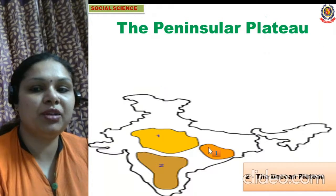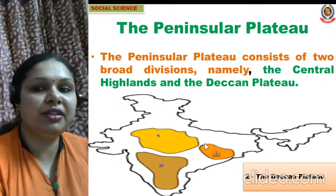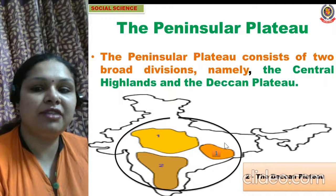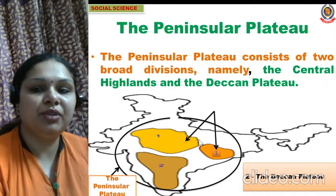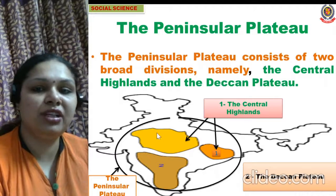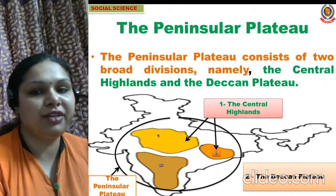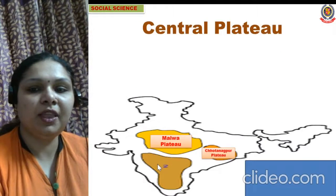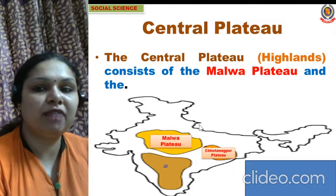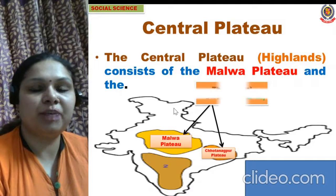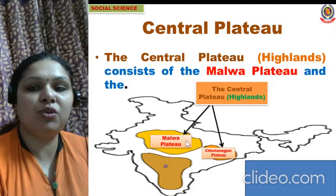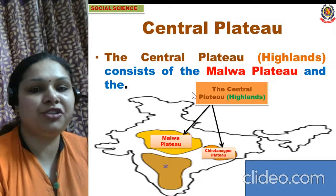The peninsular plateau consists of two broad divisions: namely the central highlands and the Deccan plateau. The central highlands consists of the Malwa plateau and the Chhota Nagpur plateau. These two plateaus make up the central highlands, and the Deccan plateau is the second part of the peninsular plateau.